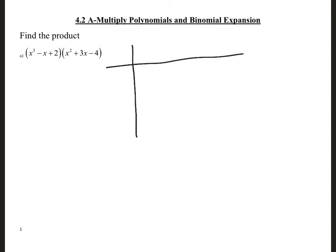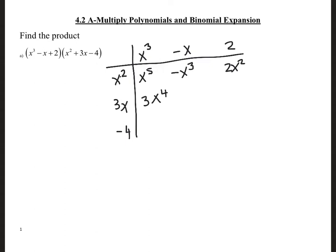I write my terms over here — this is one polynomial — and this other one I'm going to write here so I multiply them together. So this is negative x cubed, and this is 2x squared, and this is 3x to the power of 4.